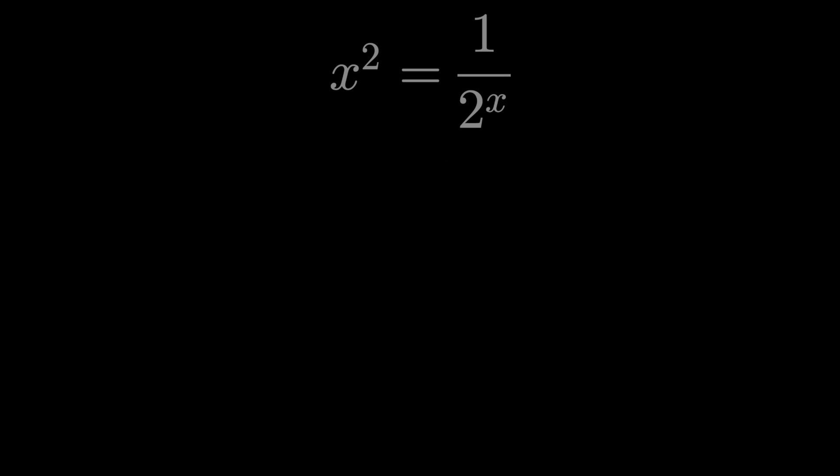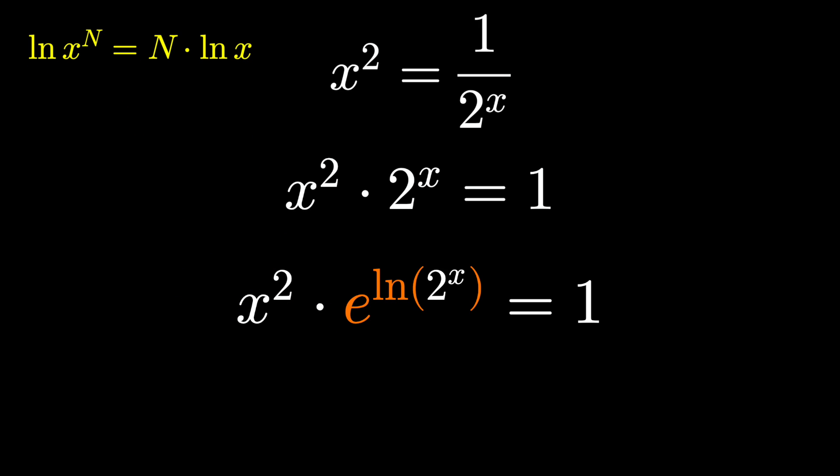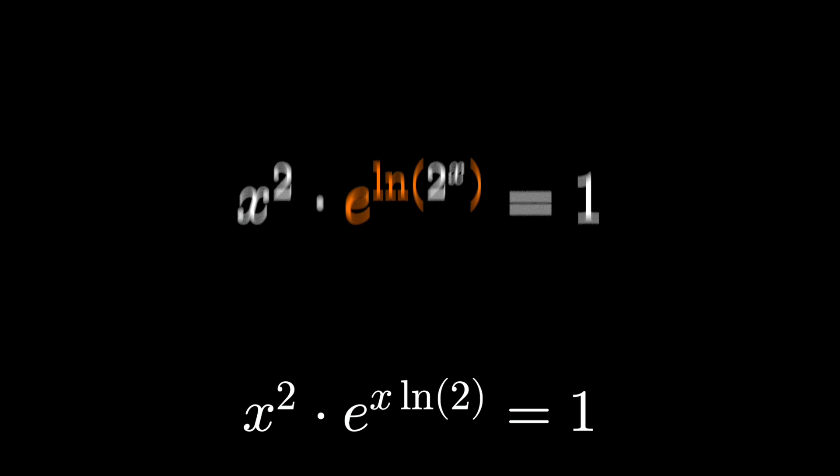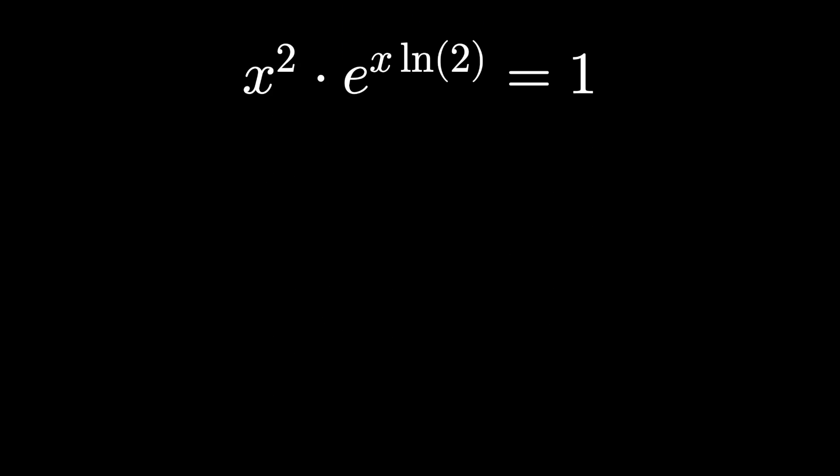Here's another approach. Multiply both sides by 2 to the x, and insert an e to the ln. Why are we doing this? Well, we can take advantage of those properties of logarithms. We can drop the exponent of x down in front of the logarithm. And we're trying to rewrite this to use the Lambert function.